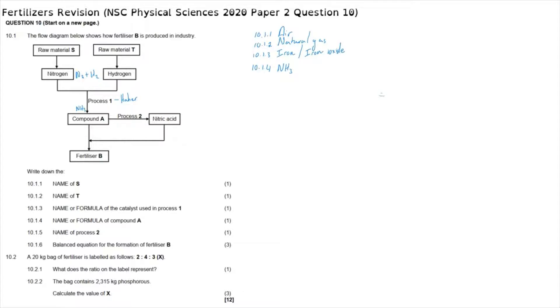Question 10.1.5: we are now asked what is the name of process 2. Process 2 is where we start with ammonia, we combine it with something in this process to form nitric acid HNO3. The process whereby nitric acid is produced is called the Ostwald process.